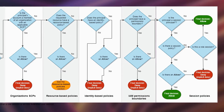If there is no allow in the permission boundary, it will be an implicit deny. If there is an allow, it checks if the principal is a session principal. If it is a session principal, it checks whether a session policy is attached. If a session policy is present and has an allow, the final decision is allowed. If no allow exists in the session policy, the implicit deny is the action taken. If there is no session policy, it checks whether there is a role session.